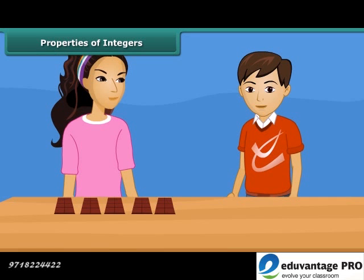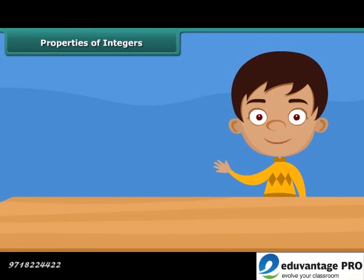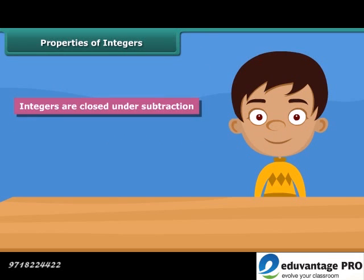Look at Rina. She has five chocolates. If she gives three chocolates to her brother, then how many chocolates are left with Rina? Yes, you are right. She is left with two chocolates. In this example, we see that difference of two integers is also an integer. Hence, integers are closed under subtraction.